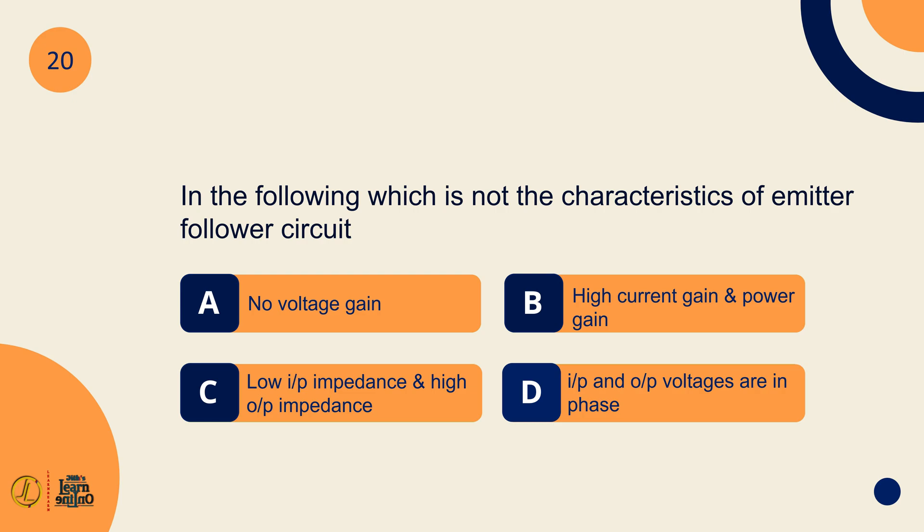In the following which is not the characteristics of emitter follower circuit: low input impedance and high output impedance.